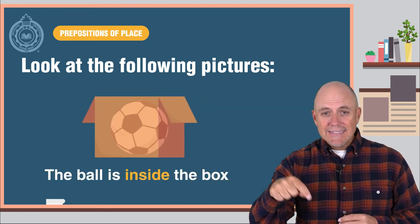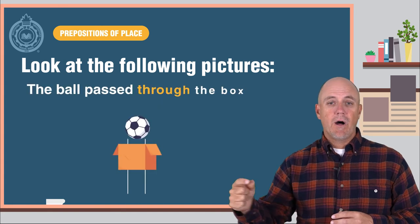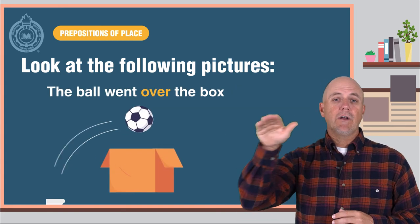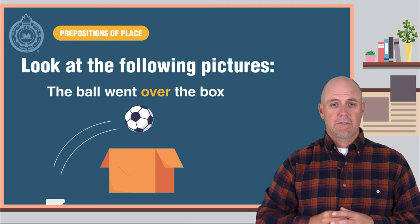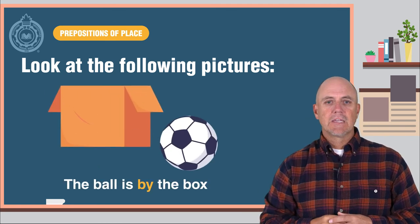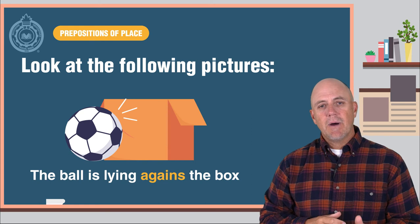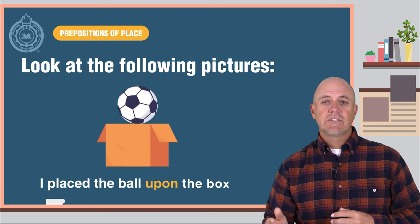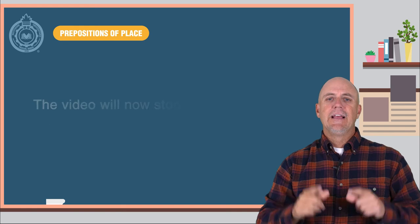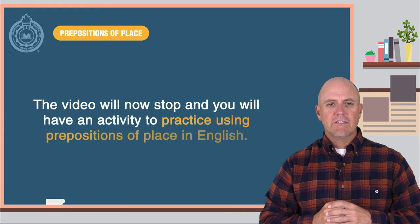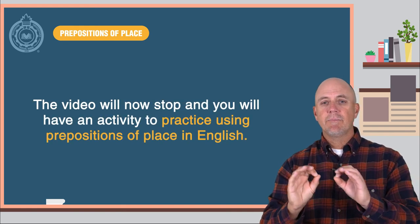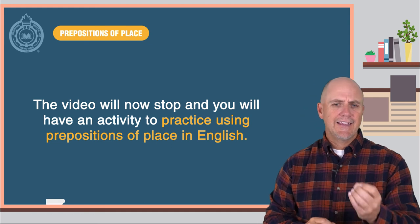The ball is inside the box. The ball passed through the box. The ball went over the box. The ball is by the box. The ball is lying against the box. I placed the ball upon the box. The video will now stop and you will have an activity to practice using prepositions of place in English.